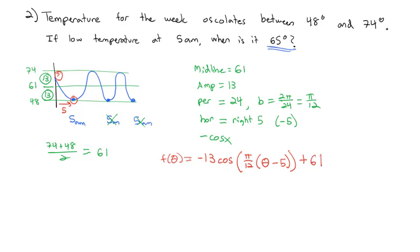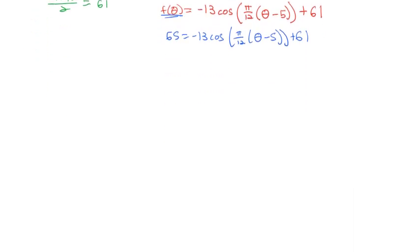This formula now, this function can now tell us the temperature at any given time of day θ. The problem is we have 65 degrees. We have the answer. We need to find the time of day. So we're going to plug that in for the f. So we have 65 equals -13cos(π/12·(θ - 5)) + 61. And we're going to solve this equation to find out what time we hit that 65 degrees.